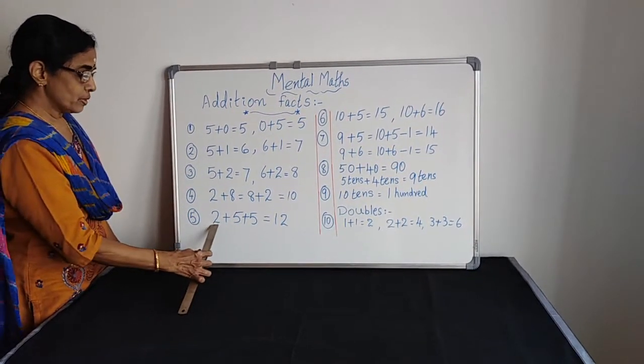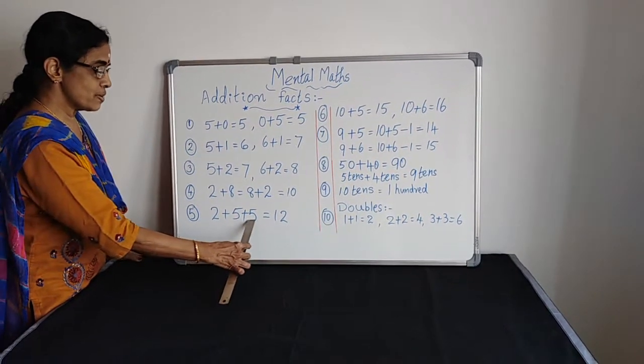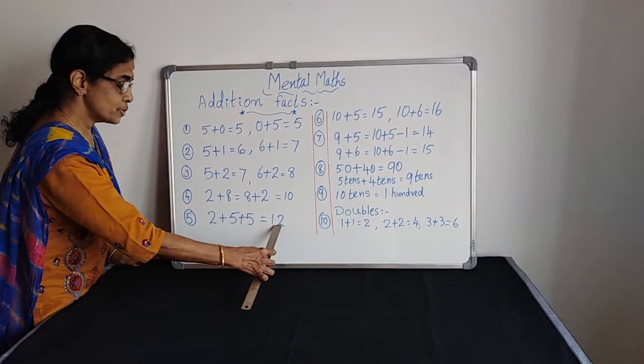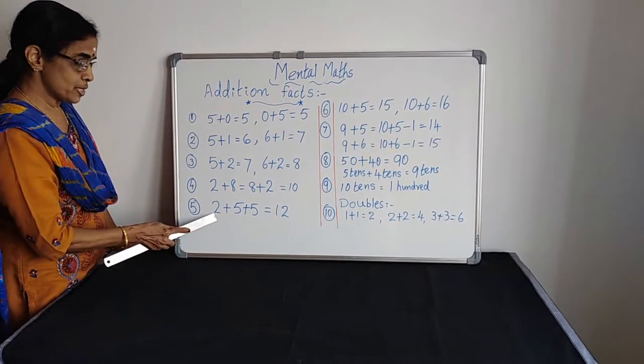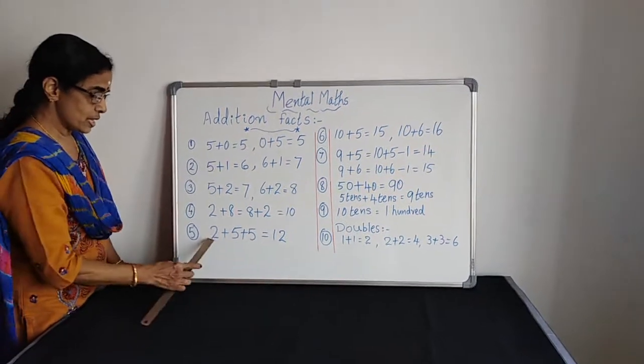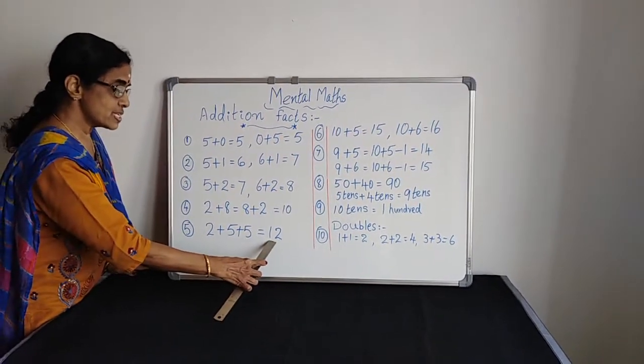Rule 5: 2 plus 5 equals 7. 7 plus 5 equals 12. We can add the other way also: 5 plus 5 makes 10, 10 plus 2 makes 12. So here in addition, the order doesn't matter. We are getting the same answer.